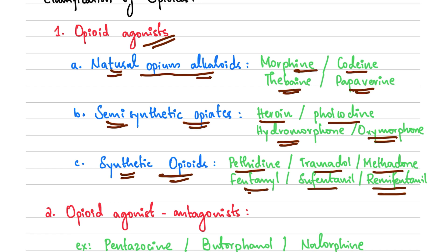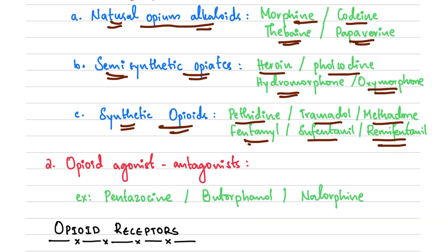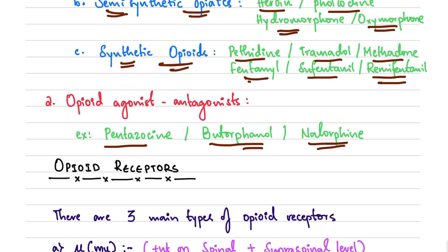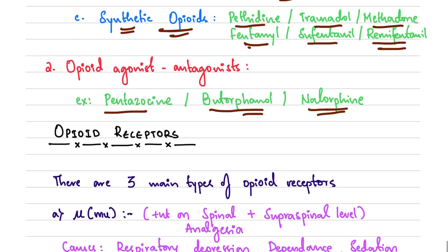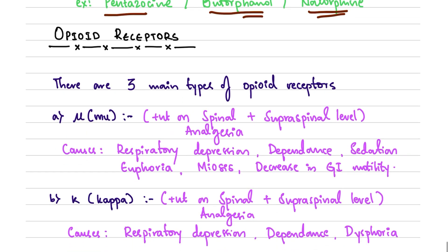Moving on to the opioid agonist-antagonists. Examples are pentazocine, butorphanol, and nalorphine. So in the agonist-antagonist category we have pentazocine, butorphanol, and nalorphine.